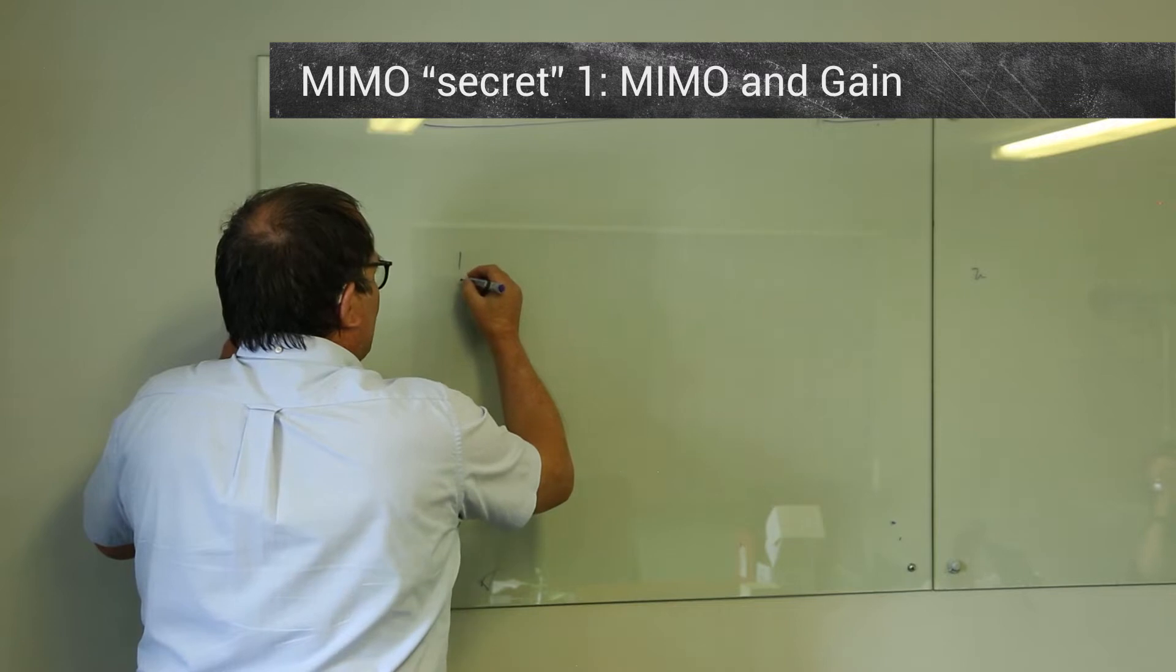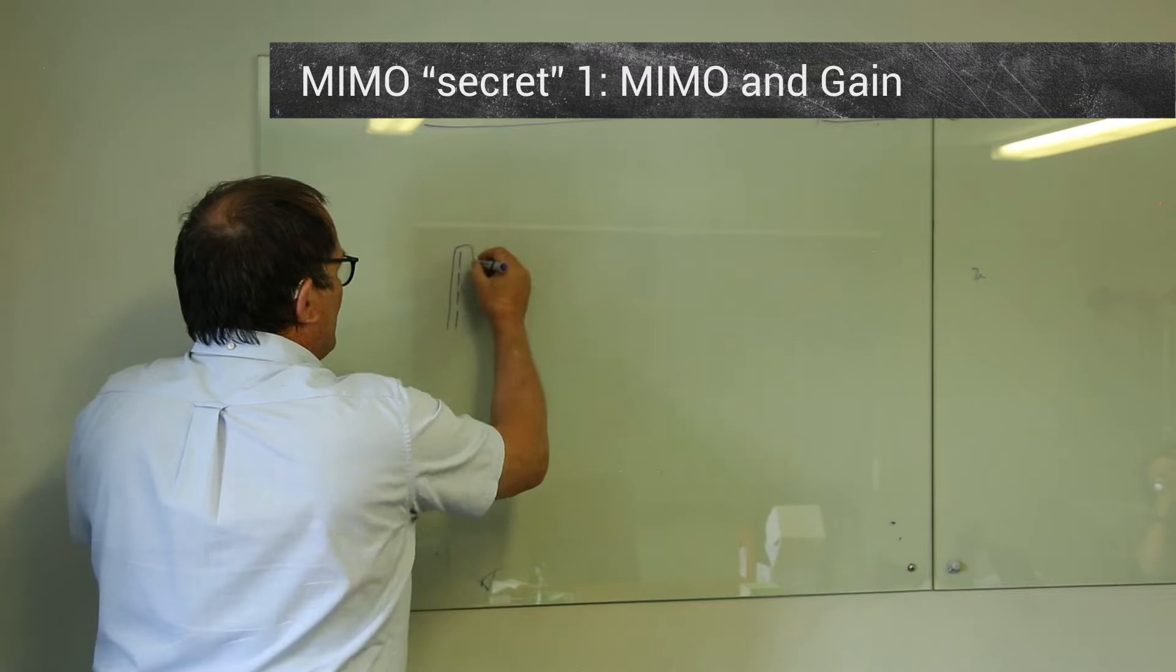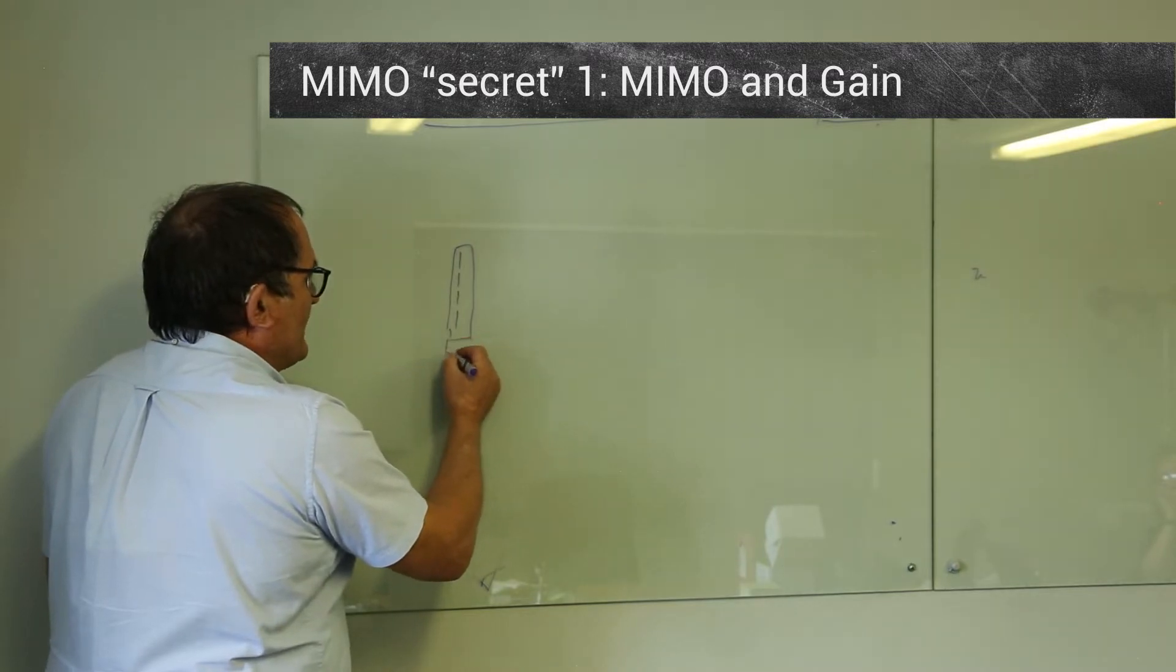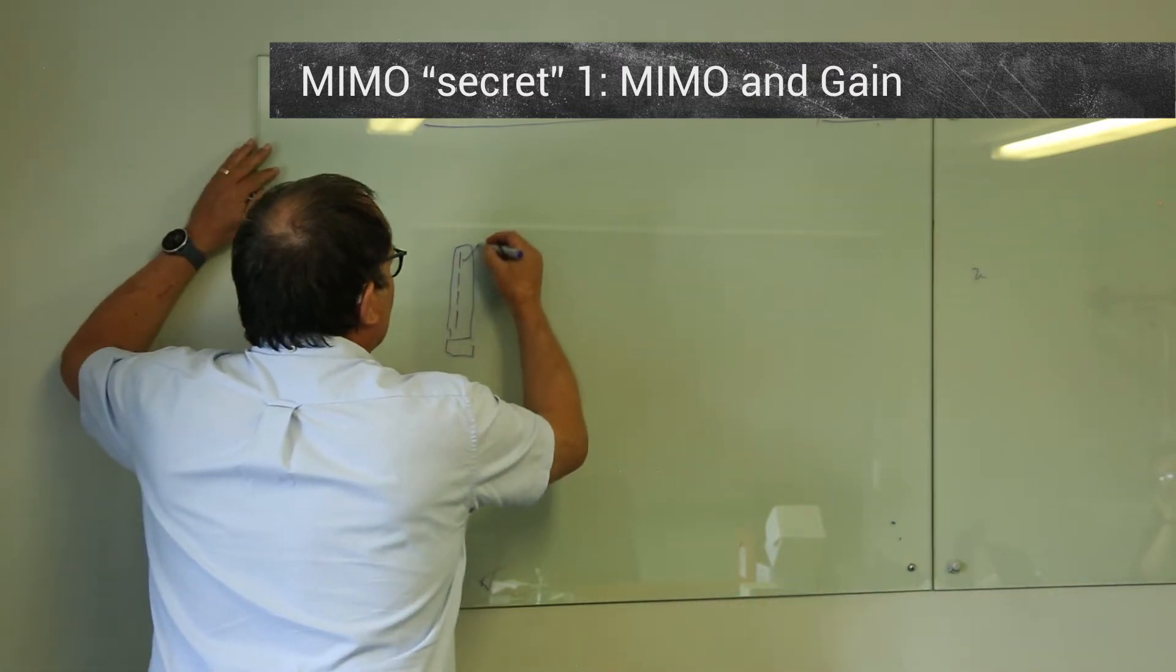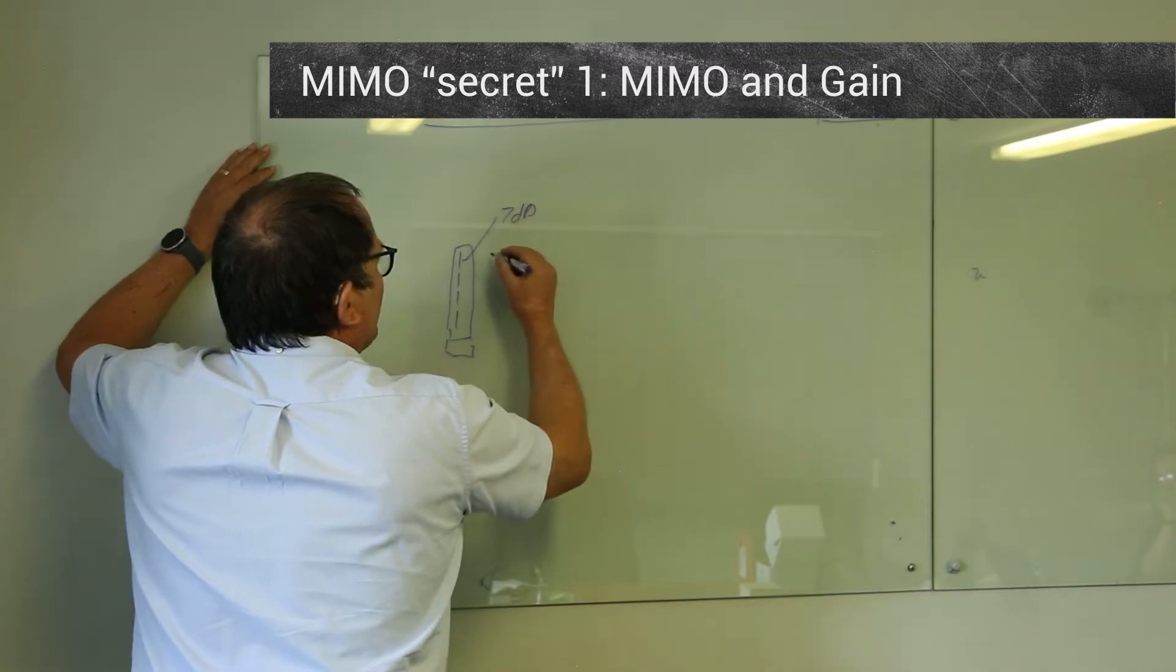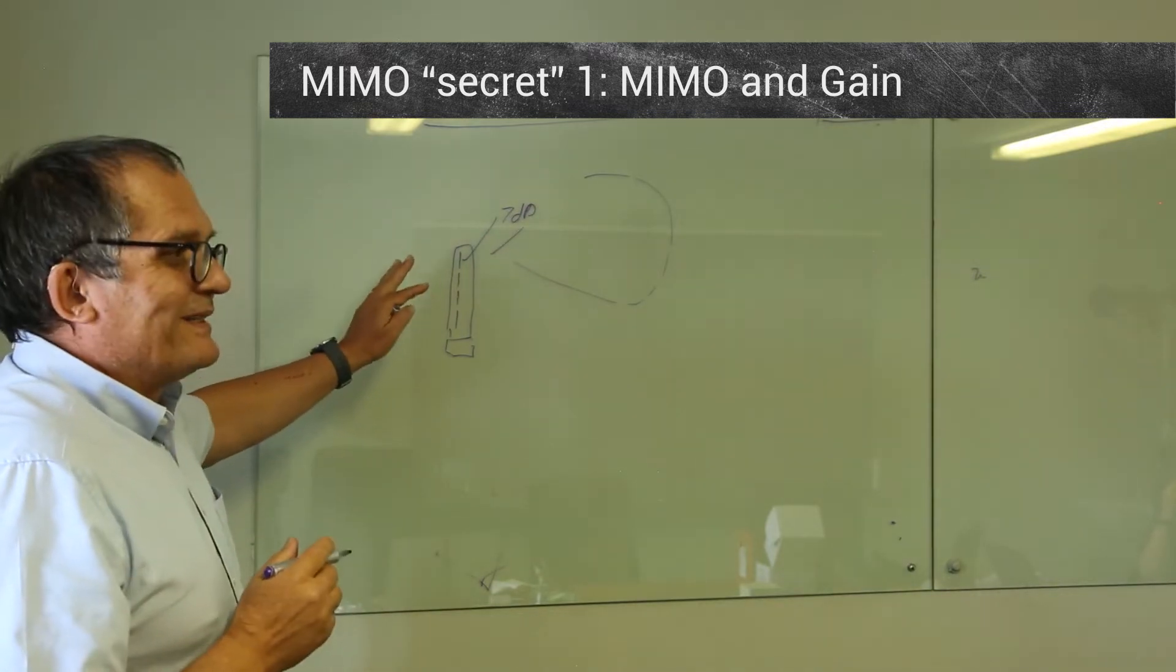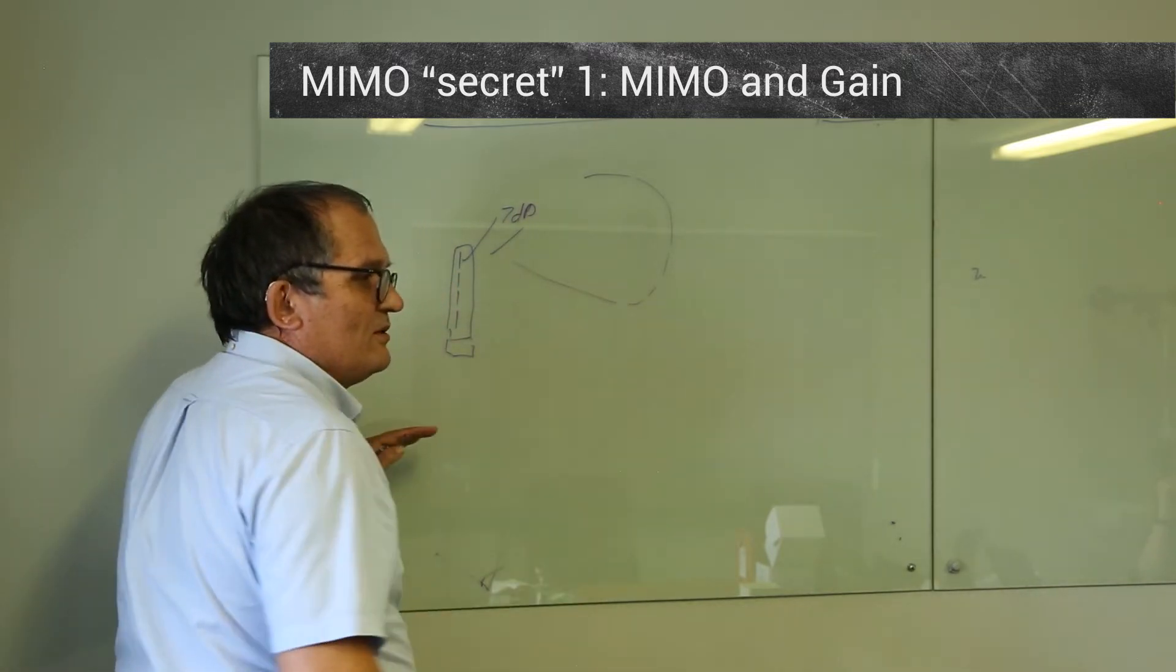So now we look at what I call MIMO ray gain. Now a good example here is we sell several 4x4 MIMO omnis, and they typically often go on yachts. What can happen here is each of these elements is roughly about 7 dBi. The reason for that is that the beam is broad, so that if the yacht rolls, you don't go out of the signal.